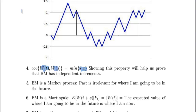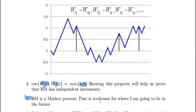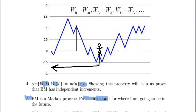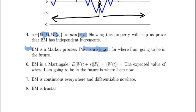Property number 5 says Brownian motion is a Markov process. What does it mean to be a Markov process? All it means is that the past is irrelevant for where I'm going to be in the future. Say we are at this point — it's irrelevant what I've done in the past, how I moved previously, for where I'm going to be in the future. Past has absolutely no bearing on my future evolution.